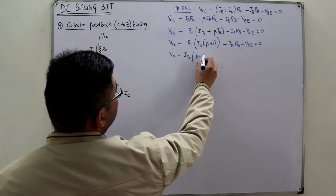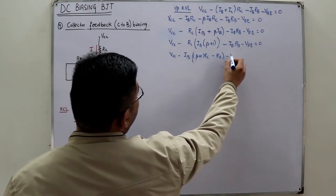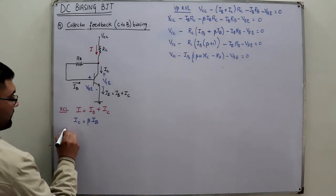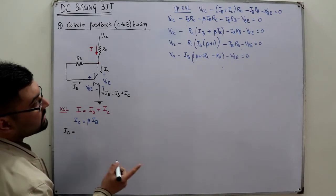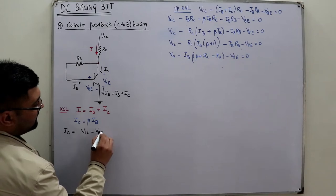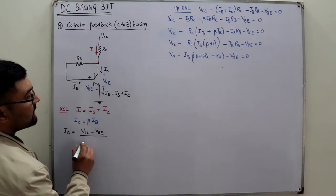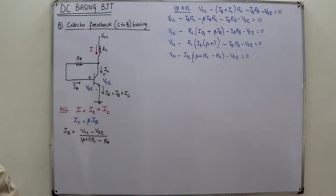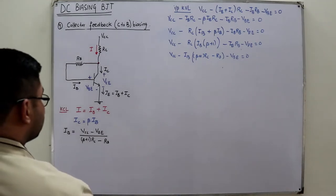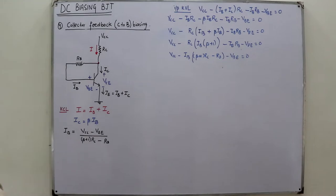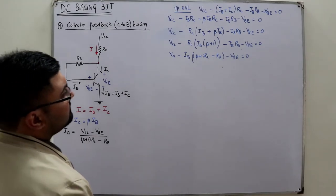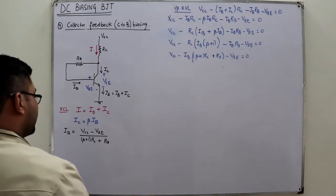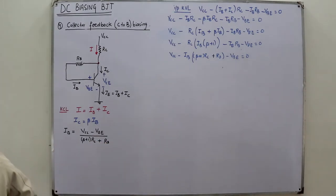Taking IB common gives: IB·[(β + 1)·RC + RB] = VCC − VBE. Therefore IB = (VCC − VBE) / [(β + 1)·RC + RB]. This is the expression for the base current IB. IC is then simply β·IB.